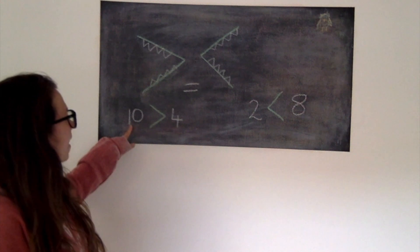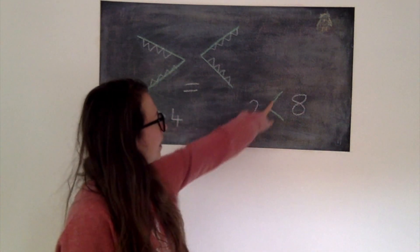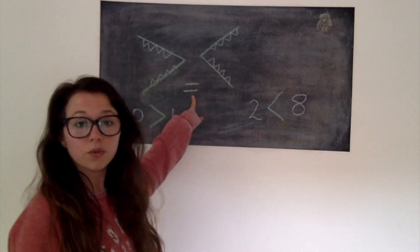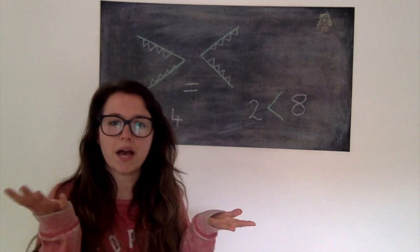So over here we've got that 10 is greater than 4 and 2 is less than 8, and then of course in the middle we've got our equal sign which means they are the same as. So perhaps 5 is the same as 5.